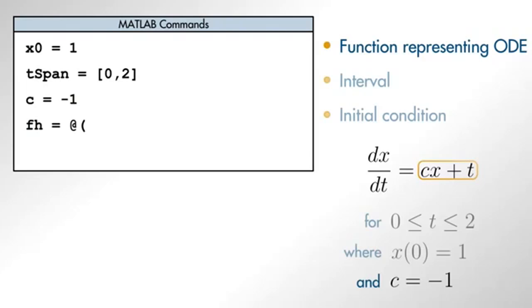It is important to note that the order of inputs cannot be switched because the ODE45 function assumes the first input represents the independent variable. Now that we have created variables to represent the ODE, let's pass them to the ODE45 function using this command.